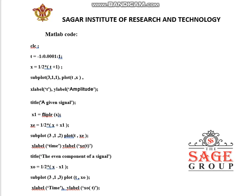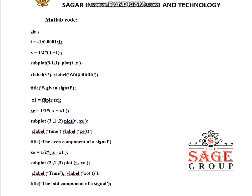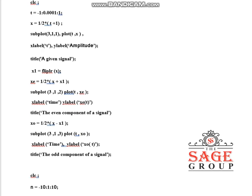According to the formula, the even component xc is given by half into x plus x1. For plotting the even component I use subplot(3,1,2), then plot(t, xc), with x-label time, y-label xc(t), and title 'even component of a signal'. The odd component is given by half into x minus x1, plotted using subplot(3,1,3), plot(t, x0), x-label time, y-label x0(t), and title 'odd component of a signal'.